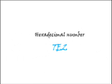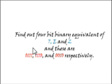Suppose we have a hexadecimal number 7E2 and our task is to convert it into its binary equivalent. For that, we have to find out four-bit binary equivalent of 7, E, and 2, and these are 0111,